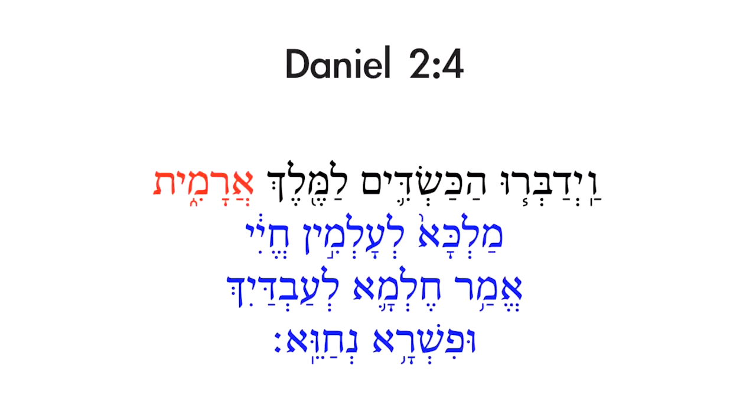Let's take a look at Daniel 2:4 just by way of illustrating this. In Daniel 2:4, you're going to see black text, red text, and blue text. The black and red text represent Hebrew. It is translated: the Chaldeans spoke to the king Aramith, or Aramaic — that's the Hebrew word for Aramaic.